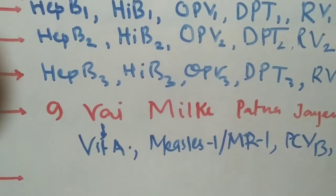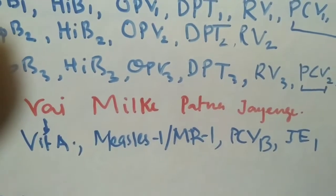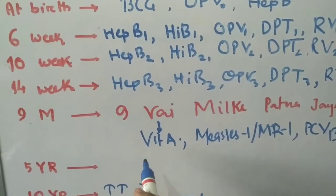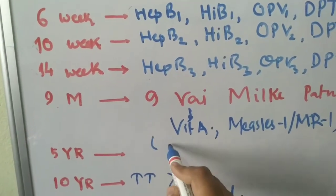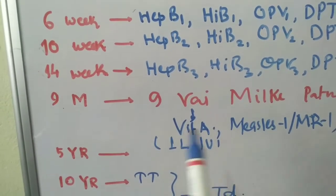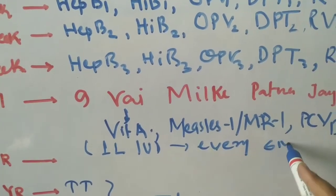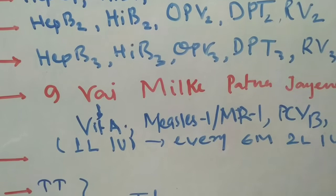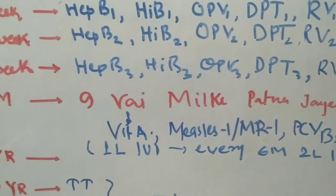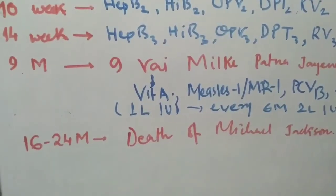Patna stands for PCV, that is pneumococcal conjugate vaccine booster dose. Jayenge stands for Japanese Encephalitis dose 1. Here you have to remember that Vitamin A initial dose is 1 lakh international units, then every six months 2 lakh international units is given till five years.